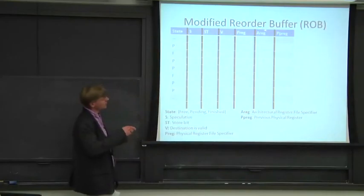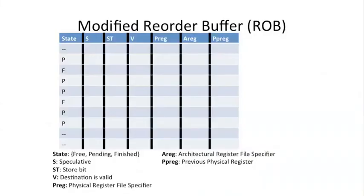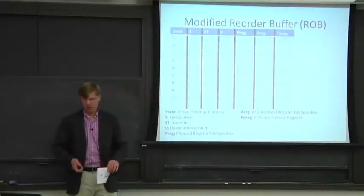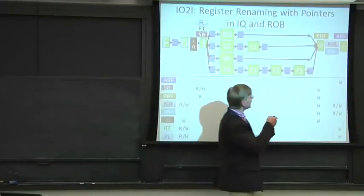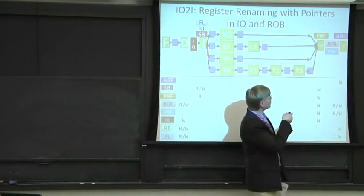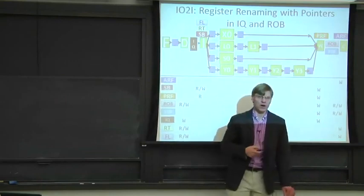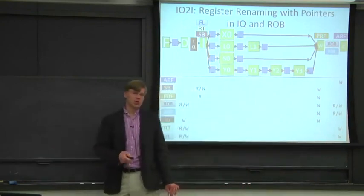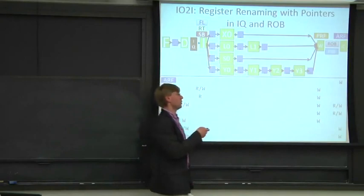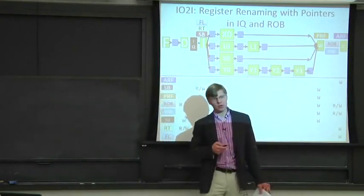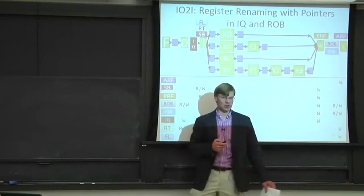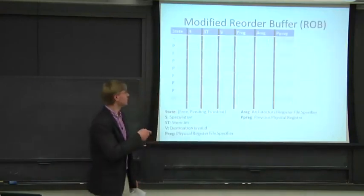Now we add extra bits to the reorder buffer. The first new field is an architectural register file specifier. When we get to the commit stage, we take something from the physical register file and copy it into the architectural register file. Since we've renamed everything, it's no longer an identity map from physical register number to architectural register number. So we need to know where to actually write in the architectural register file. This field tells us where to write — the physical register specifier tells us where to read from, and this tells us where to write to.